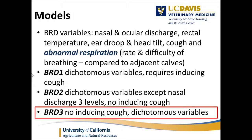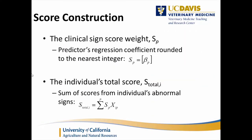Three scoring systems were developed. BRD1 uses all variables as dichotomous — present or absent — and required inducing cough. BRD2 also uses dichotomous variables except for nasal discharge, which was better fit with three levels: normal, mild, and moderate/severe; BRD2 did not require inducing cough. BRD3 is the final system projected for use: it doesn't require inducing cough and all variables are dichotomous. In summary, the coefficient from the regression model is used as the score, and the individual calf's total score is the sum of observed clinical signs.